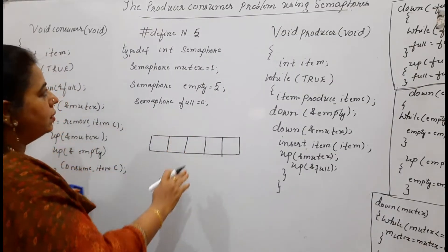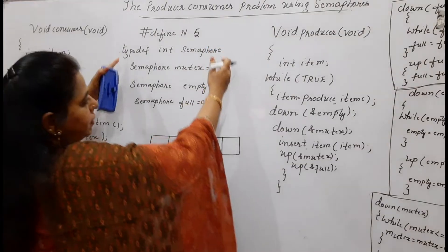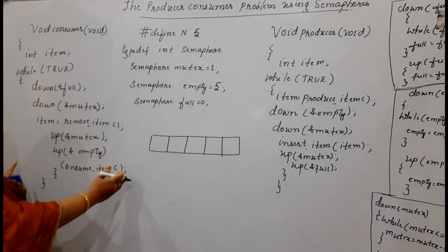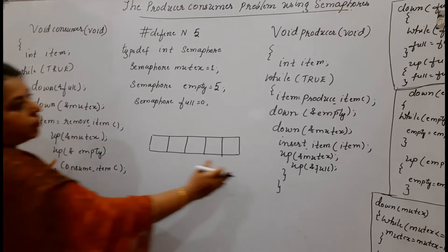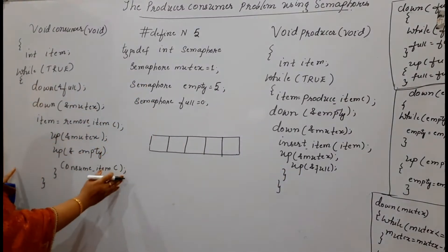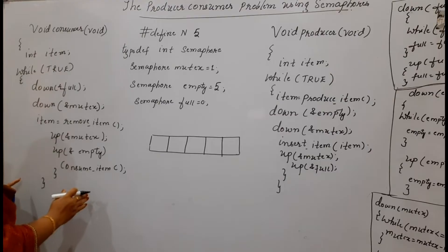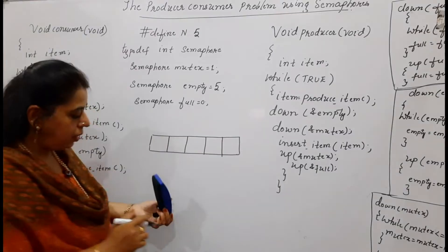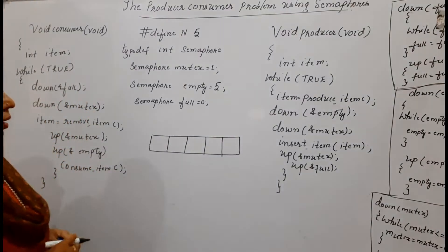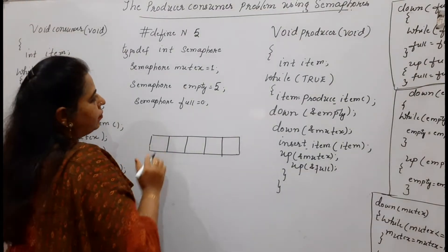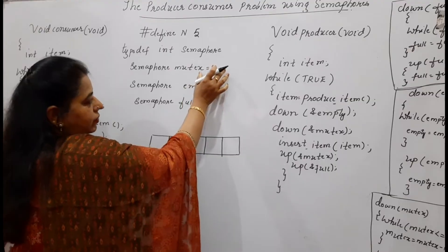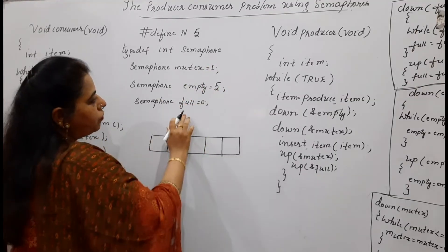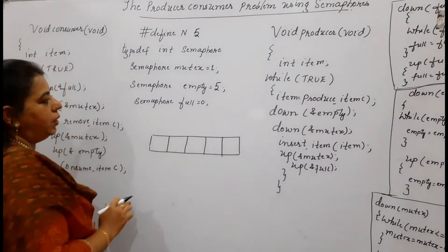The complete code consists of the declaration part, the pseudo code for the semaphore operations, pseudo code for the producer, and pseudo code for the consumer. We will start seeing the lines in the producer and consumer one by one. The initial values for the semaphores are: mutex equals 1, empty equals 5, and full equals 0.